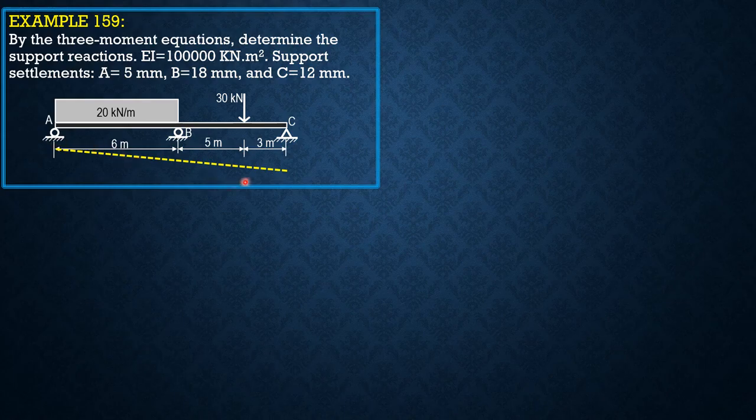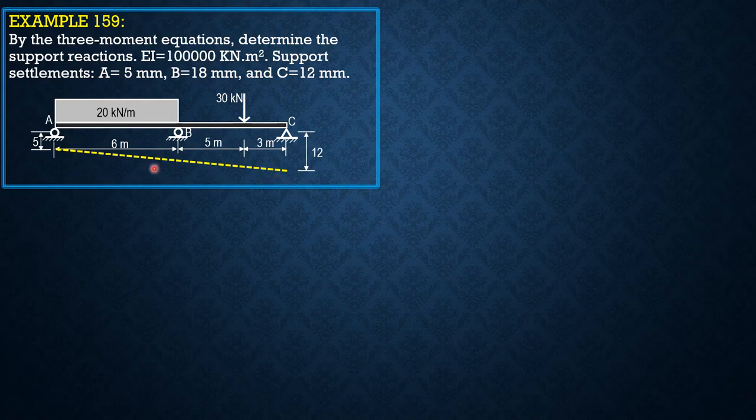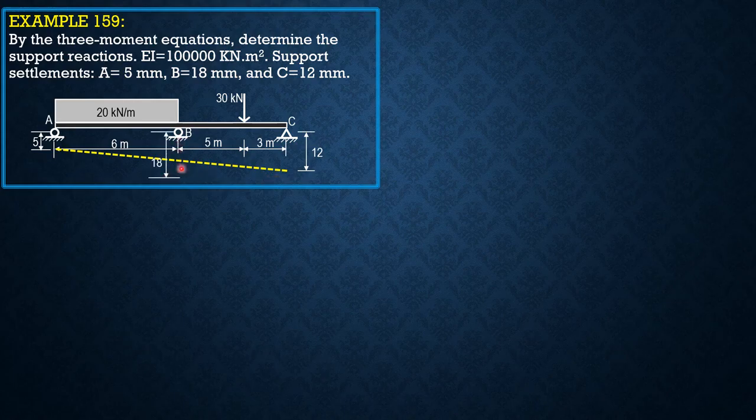So where is the given figure, and this is the imaginary line for the settlements of A and C. At B we have to locate it. So 5 mm, this is 12 mm on the other end, 18 mm at B.